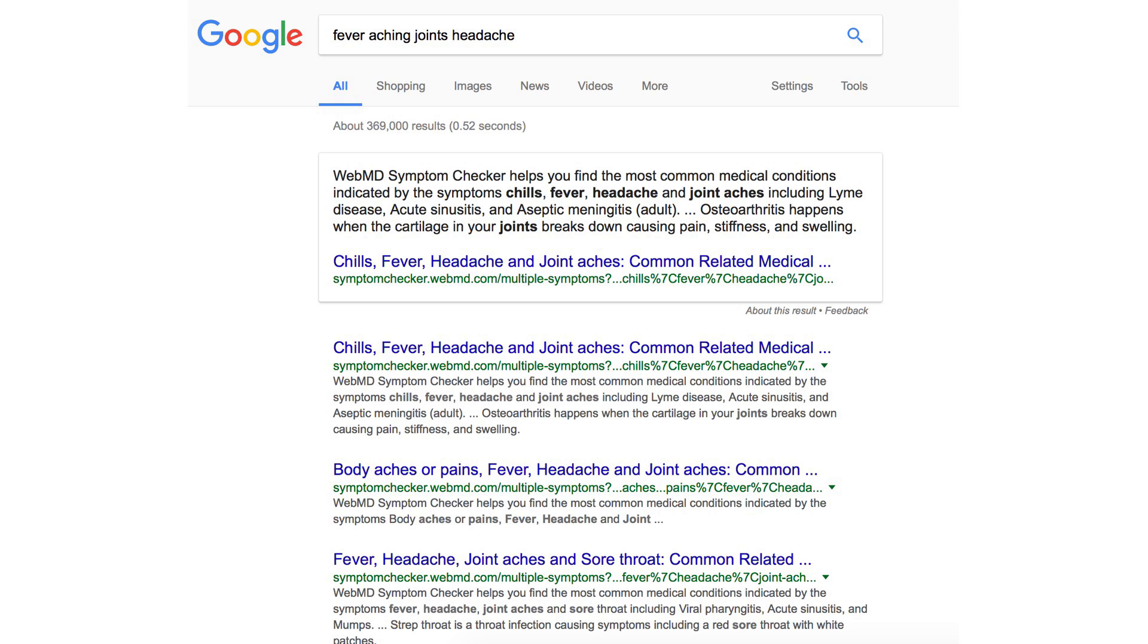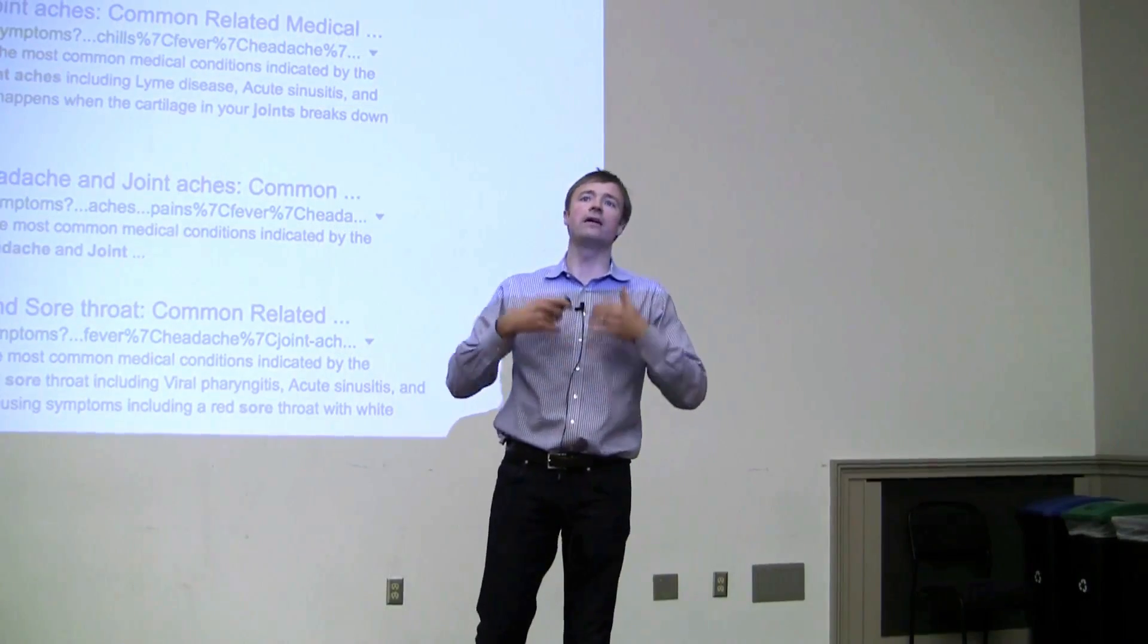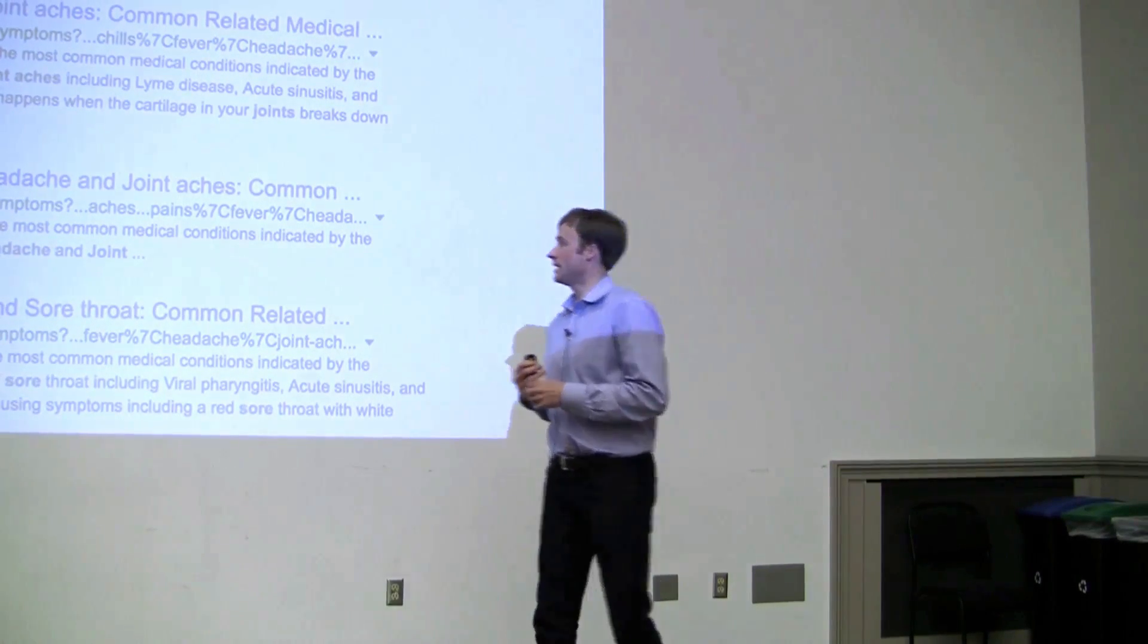By taking a set of search queries in particular locations around the country, maybe I could use those as a way of predicting which areas need the flu vaccine first. Where is flu outbreaking in the United States?